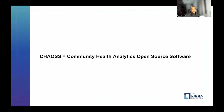The CHAOSS project is a Linux Foundation project focused on open source community health. At CHAOSS, we develop metrics and software that help define open source community health. And by measuring health, we are able to improve the transparency of an open source project, allowing many stakeholders to make informed decisions about different issues as regards community health in your project.